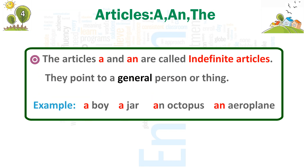The articles A and AN are called indefinite articles. They point to a general person or thing. Examples: a boy, a jar, an octopus, an aeroplane.